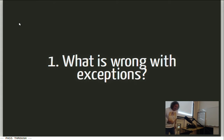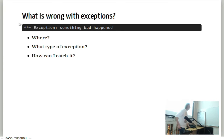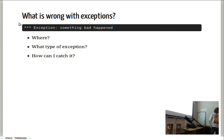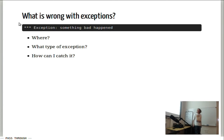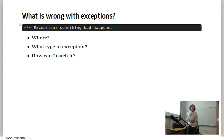So, what is actually wrong with exceptions? If I get an exception, something bad happened. But there's some crucial information missing. I don't see where it happened, and I don't see what type of exception this is. And if I don't know the type of exception, I cannot even catch it — I can't easily catch specific exceptions.